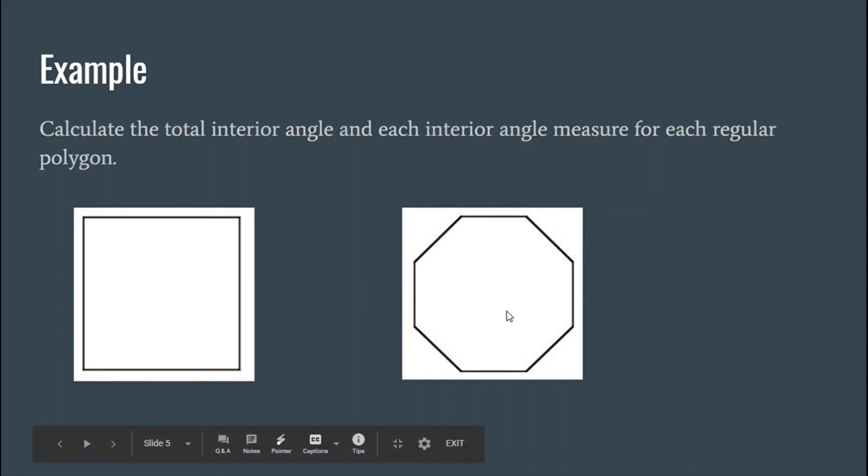Now for this one, this one has eight sides, so our n is 8. So the total interior angle: 8 minus 2 is 6, and 6 times 180 is 1080 degrees.